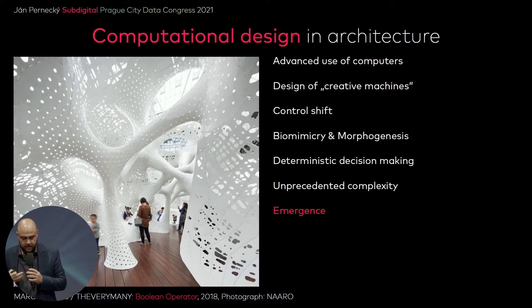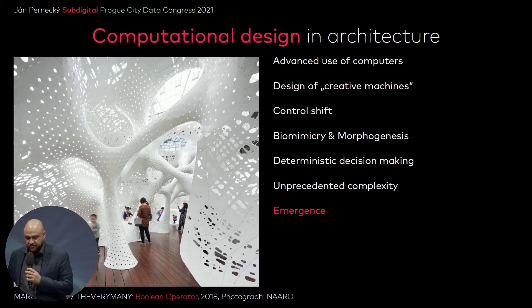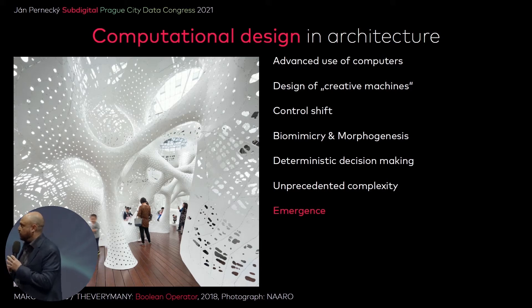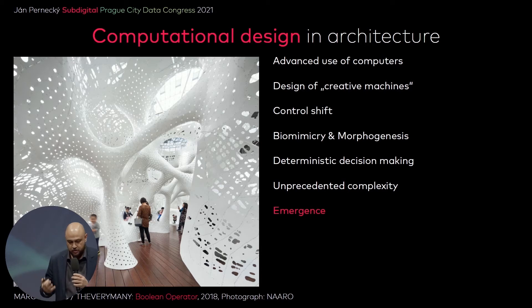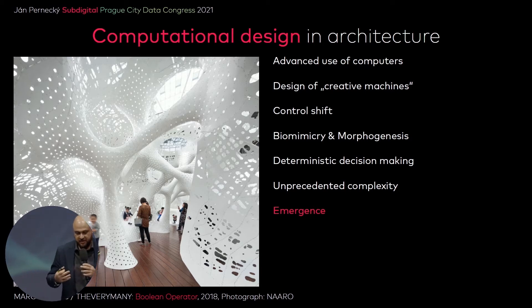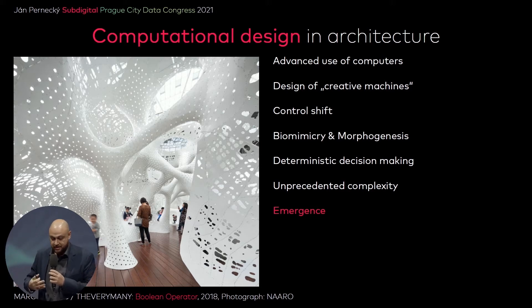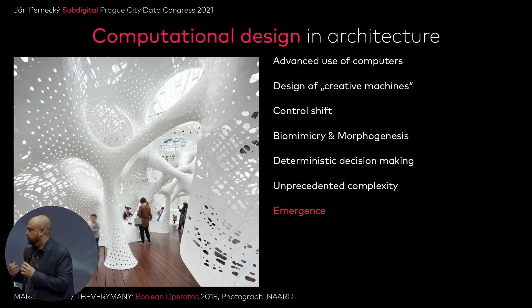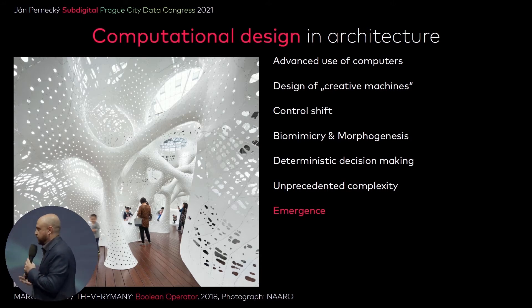That means that control over the design is shifted — the moment when architecture happens moves from an individual informed decision to a computer algorithm. Very often in computational design we use either biomimicry or morphogenesis, meaning we are somehow repeating what nature usually does, but all decision-making is completely deterministic. Everything we create is based on procedural decision-making and on data.